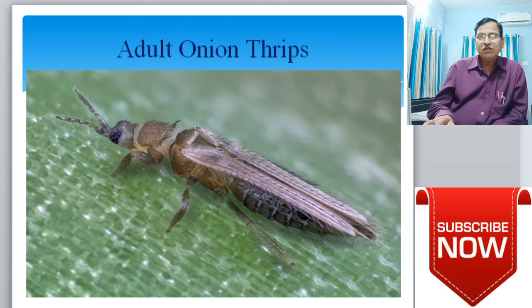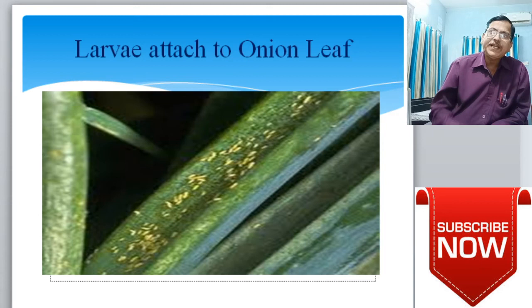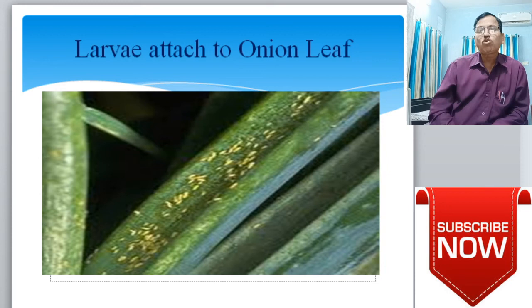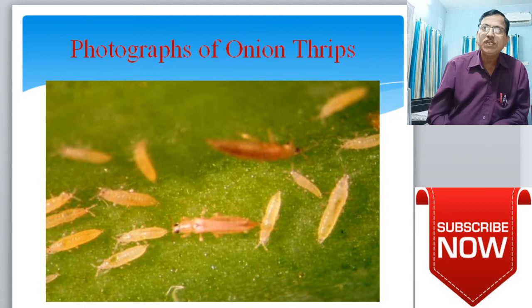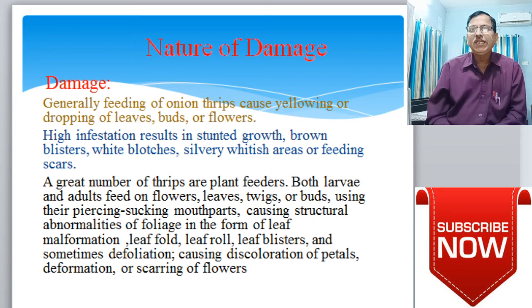Photographs show adult onion thrips causing damage to onion plants. Onion thrips larvae are present on the leaves of onion, attacking severely. Damage occurs through the leaf parts, reducing photosynthetic activity, causing stunted growth and abnormal plant development. Photographs show onion thrips present on the leaves of onion.